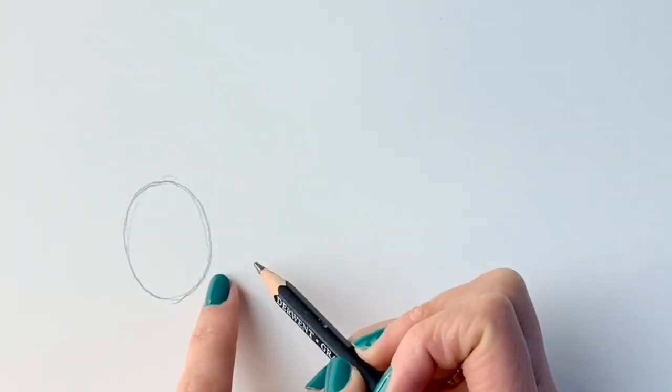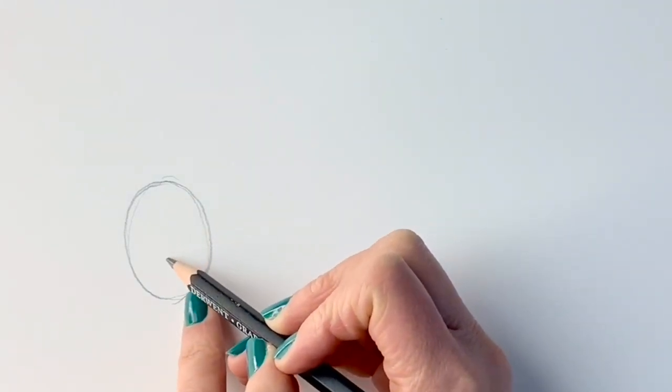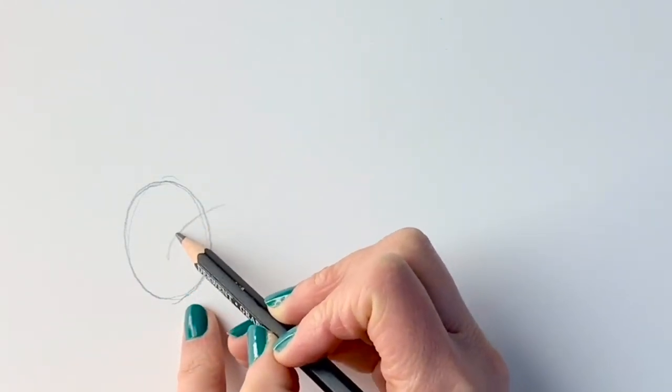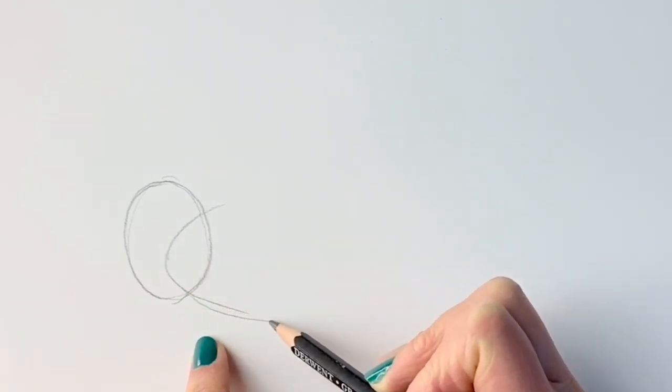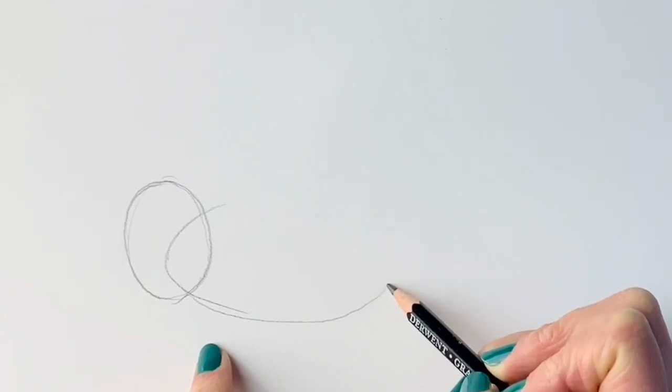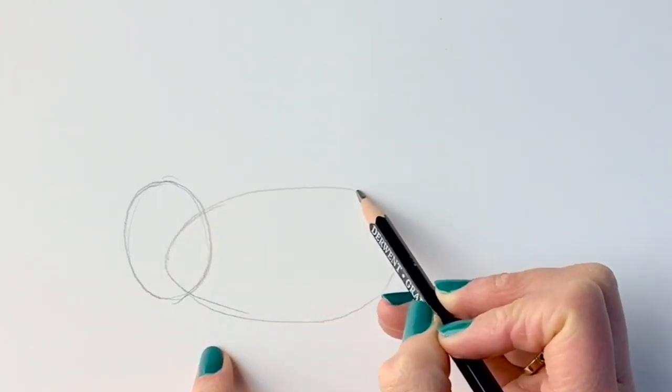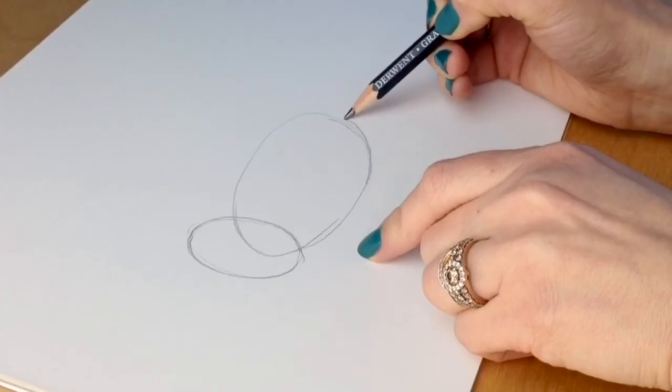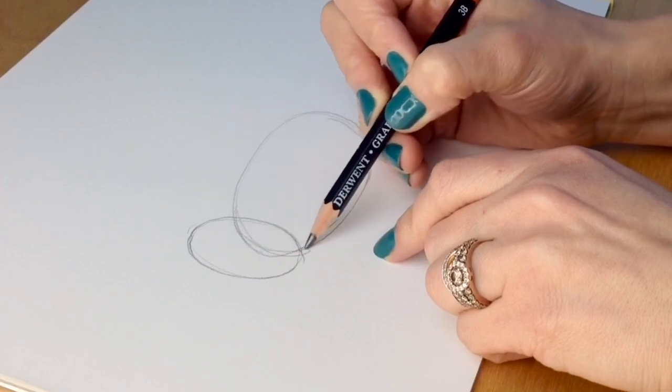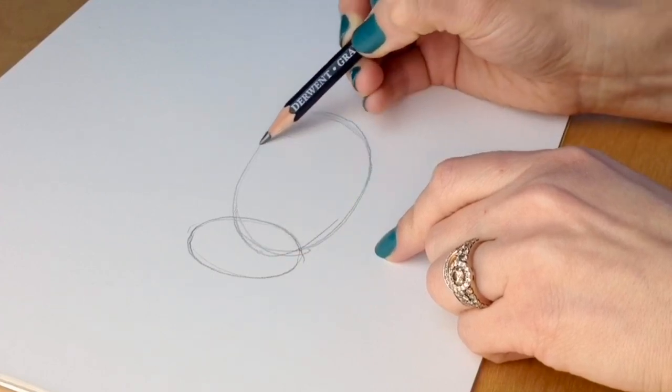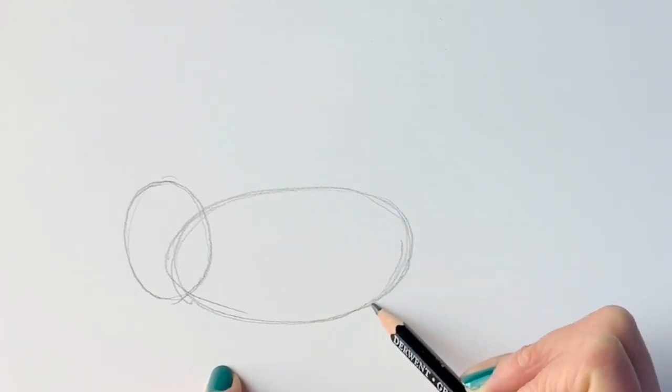Next, I'm going to be drawing another oval shape just to the right-hand side, which is going to be the body. Now, this one overlaps the other one. I'll show you what I mean. Just something like that. Now, these are just rough guidelines, so it doesn't really matter if they're perfect or not.